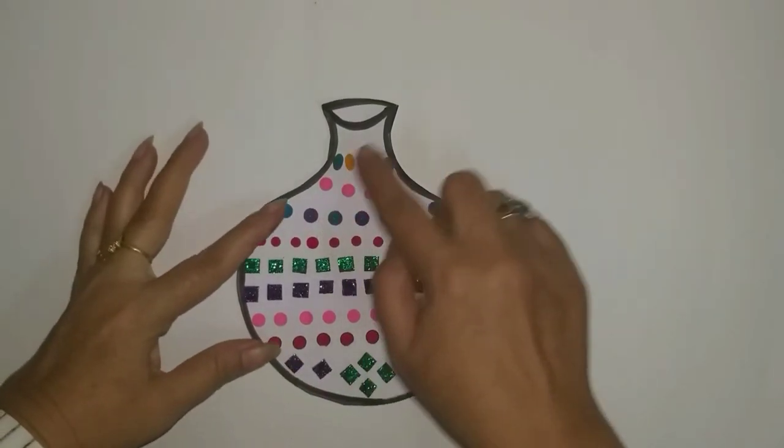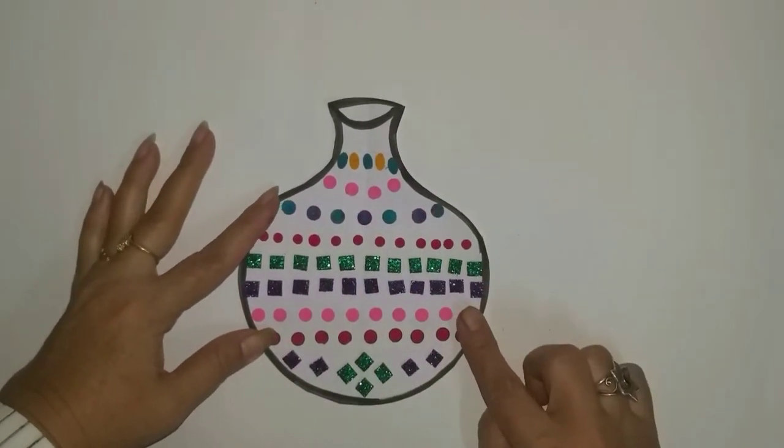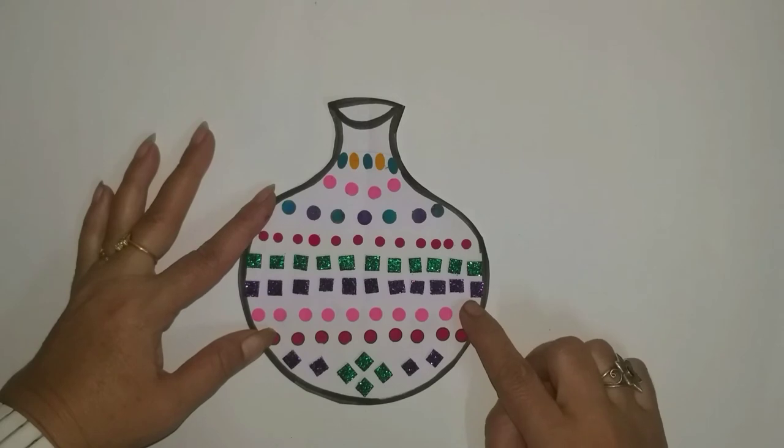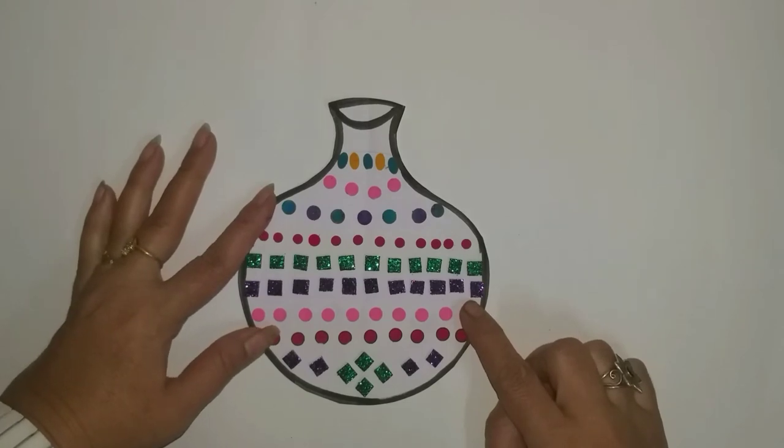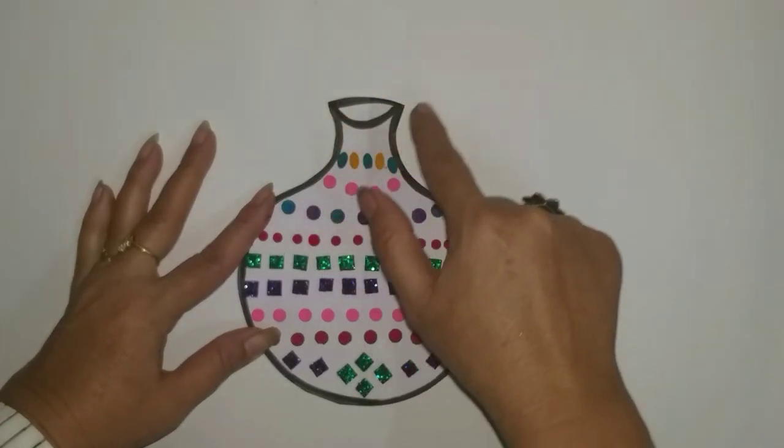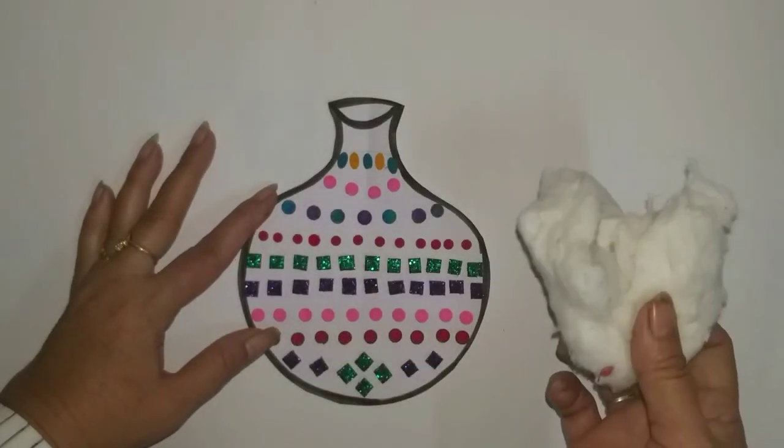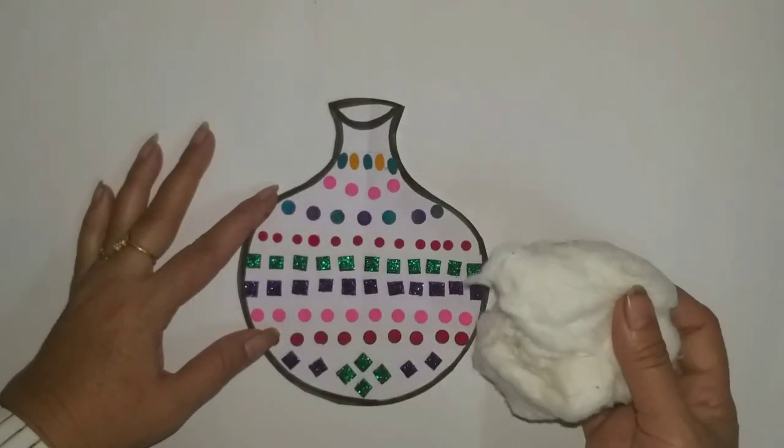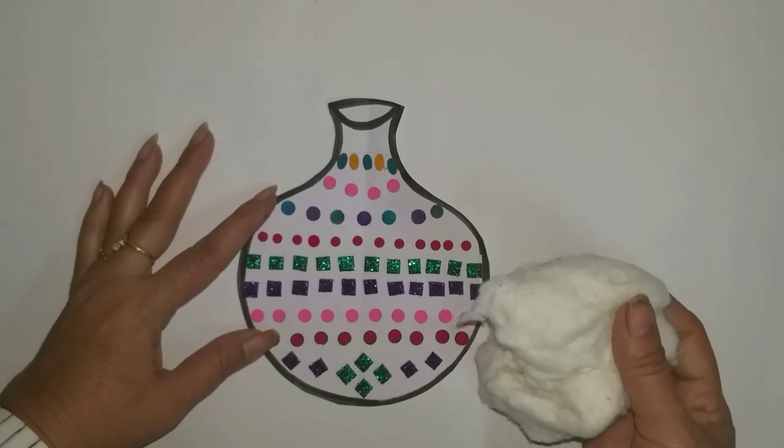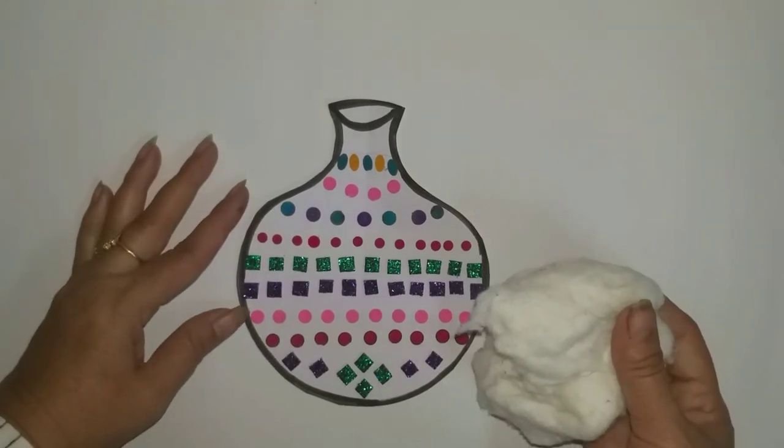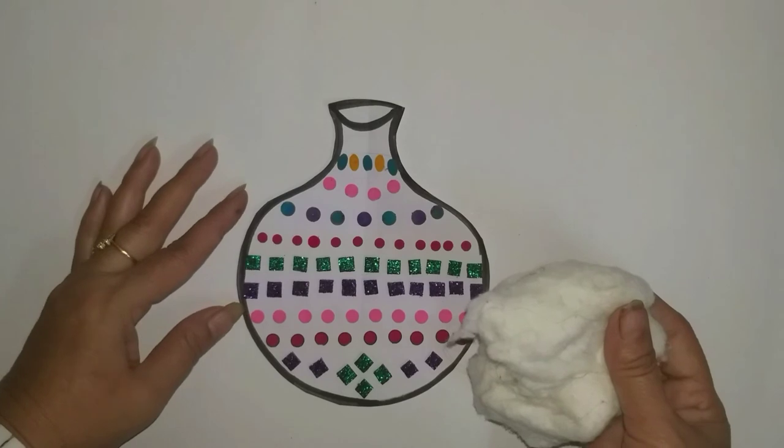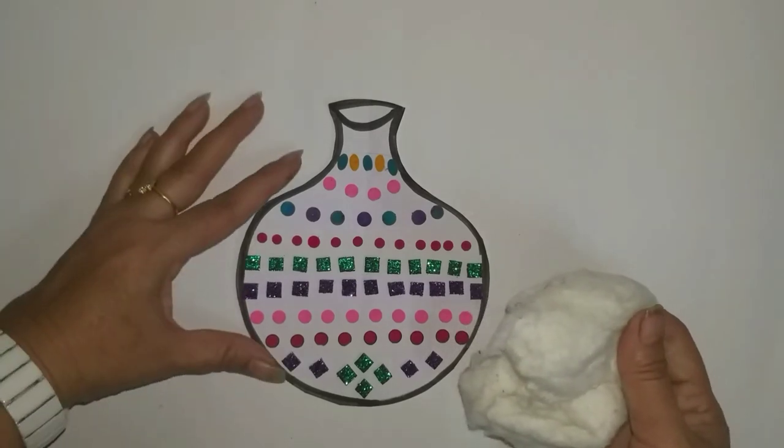See how beautiful the matki is! The colorful matki decoration is done. After the matki, we will make cotton to represent milk. Because our Lord Krishna loved milk, so we are making decorated milk.